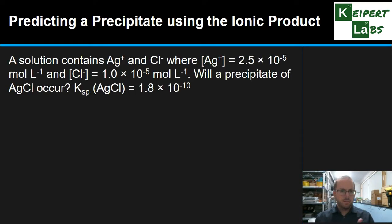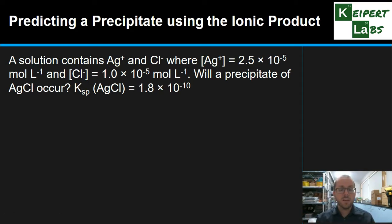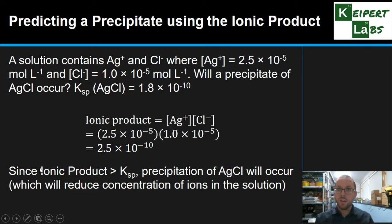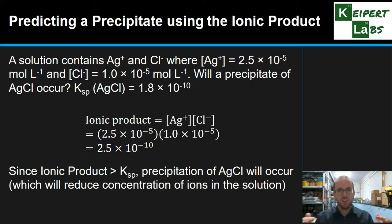So let's say we have a situation with specific silver and chloride concentrations in solution and we ask: will a precipitate of silver chloride form? We calculate the ionic product and get 2.5 times 10 to the minus 10. Comparing this to the KSP value, we see it is larger. Since the ionic product is greater than KSP, yes — precipitation will occur in order to bring the concentrations back down to the equilibrium saturation point.